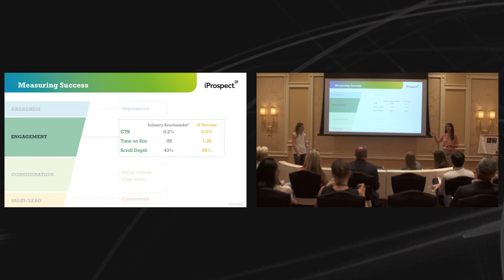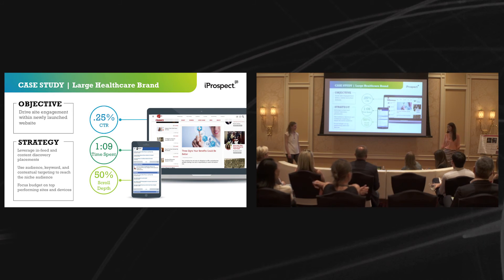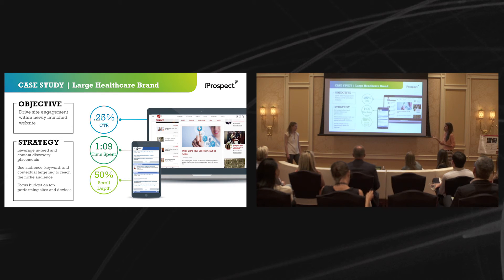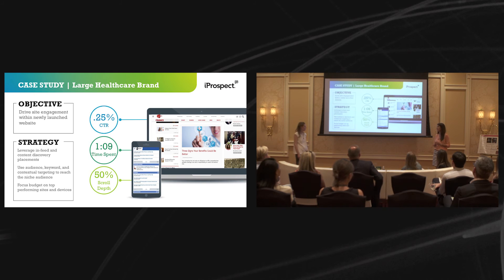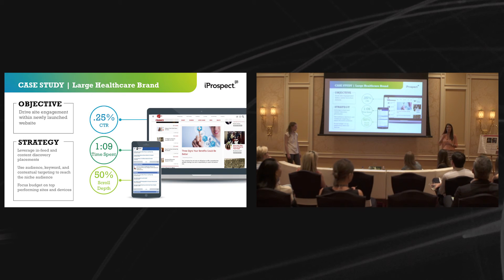A great case study: one of our large healthcare brands came to us saying they were launching a new website — no one knew anything about it, they couldn't even retarget because barely anyone had visited. We said native. They had great content for the new site and we customized it to all different types of audiences. The result was amazing engagement: a good click-through rate, over a minute of time on site, and 50% scroll depth. That might not sound like a lot, but those users were actually reading 90 to 95% of the content — the bottom 25-30% is just contact us or more about us. People were reading almost 90% of the content on average and typically going two, three, four pages deep within the site. It really proves the value of reaching the right audience and amplifying the right content.